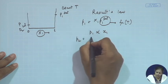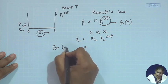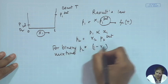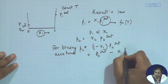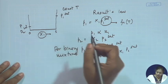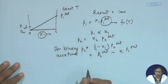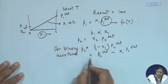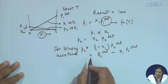Similarly, p₂ equals x₂ p₂ saturated. For binary mixtures, p₂ equals p₂ saturated minus x₁ p₂ saturated, so p₂ is inversely proportional to x₁. If we plot p₁ as a function of x₁ we expect a linear plot. The plot of p₂ versus x₁ is also linear — all these things we have discussed in the last class.